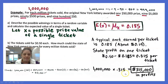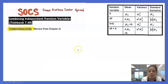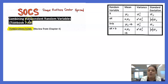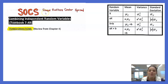Today we're talking about independent random variables and what happens when you transform them. Since we're talking about random variables, remember we are talking about numerical variables, so the SOCs apply. When you talk about a numerical variable, you want to talk about shape, outliers, center, and spread.